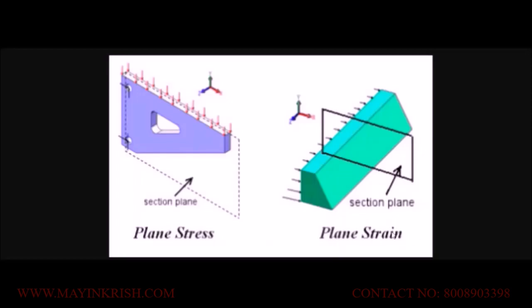Before describing plane stress and plane strain, let me explain why one object is considered a thin plate and the other a thick plate. If you observe the dimensions of an object, the length and height are comparable to each other, but the thickness is not comparable with either the length or the height, which means the thickness becomes negligible — so we consider this a thin plate. Similarly, when the length, height, and thickness of an object are all comparable to one another, we consider it a thick plate.